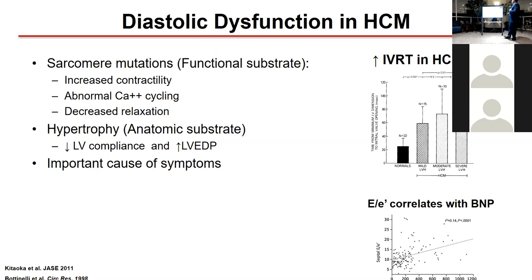Diastolic dysfunction is another determinant of symptoms. Increased cross-bridges are the functional substrate, and hypertrophy is the anatomical substrate, both contributing to diastolic dysfunction. This results in decreased compliance and decreased LV filling pressures, and is an important cause of symptoms. Markers of diastolic dysfunction correlate with BNP and are associated with reduced survival in this population.